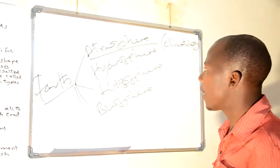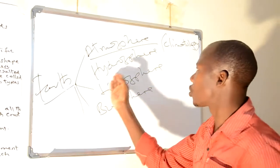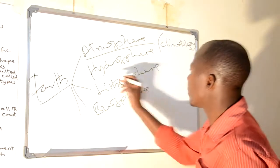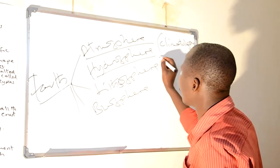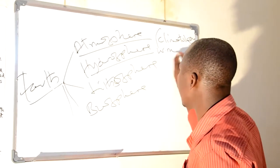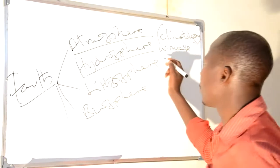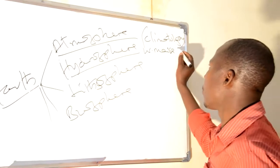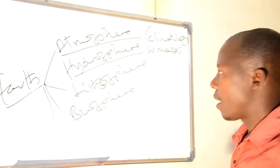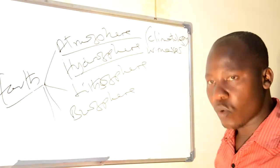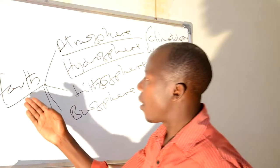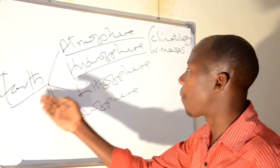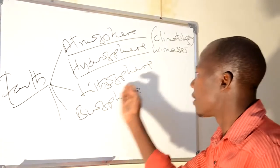Thereafter, we learned about the part of the earth called the hydrosphere, and the topic at the advanced level is called water masses. Today, we have to describe another part of the earth which is called the lithosphere.